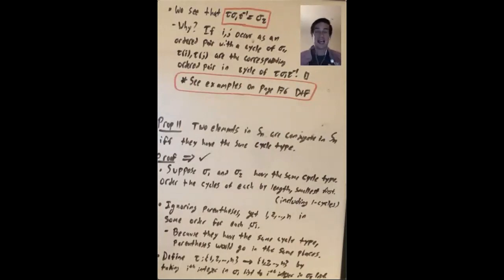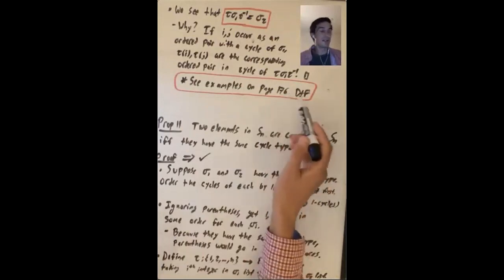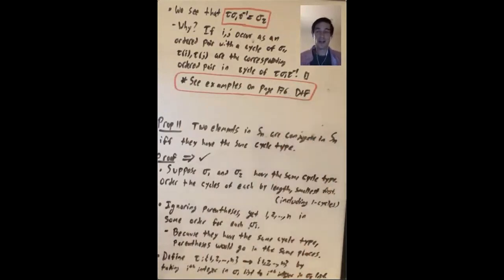This is exactly the kind of argument that is much easier to understand if you work through an example on your own in S₅ or similar. On page 176 of Dummit and Foote there are examples for you to study, and you can come up with your own examples too.